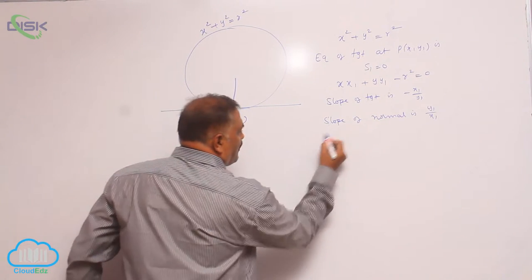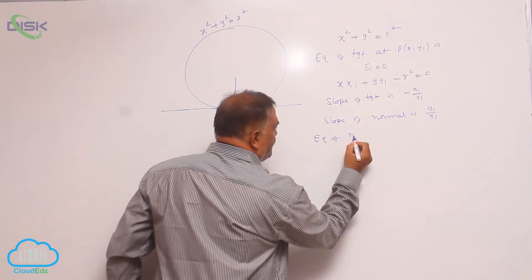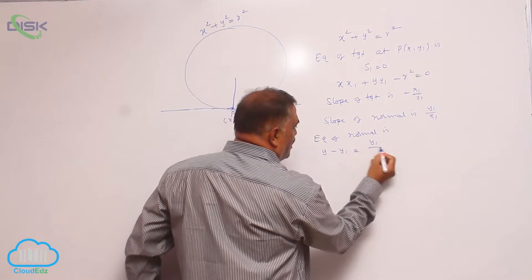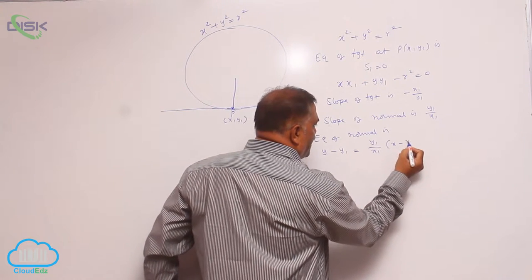What is equation of normal? y - y₁ = (y₁/x₁)(x - x₁).